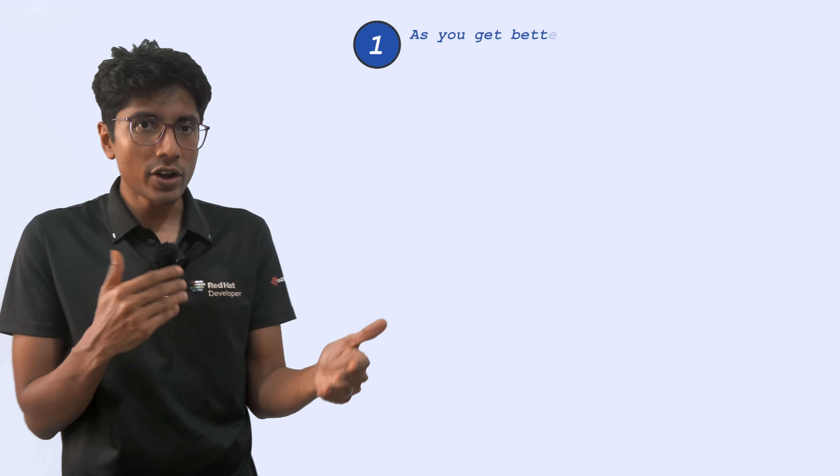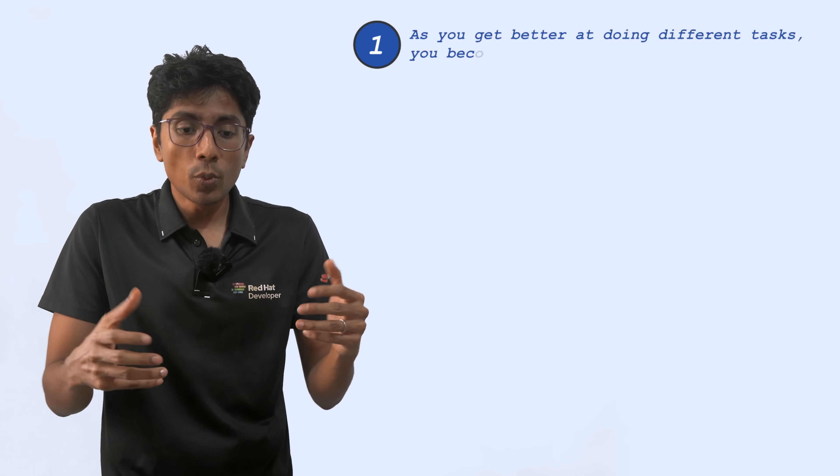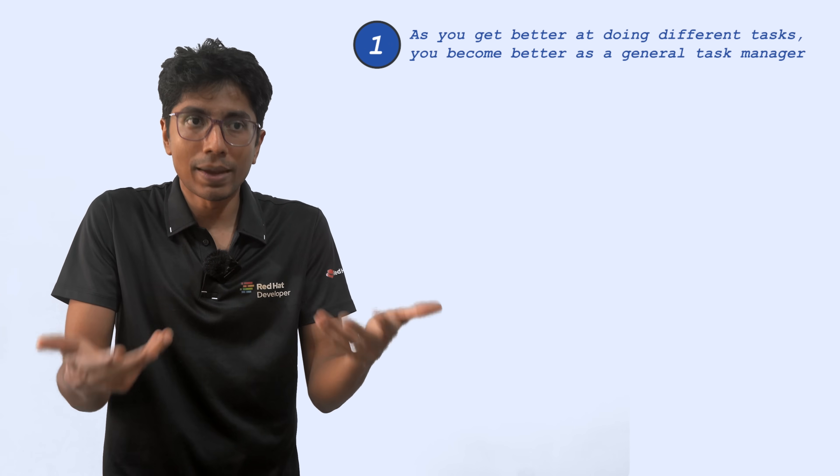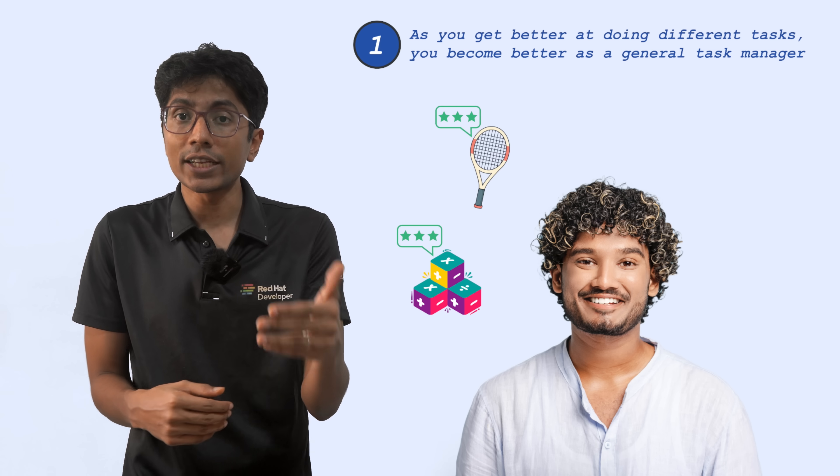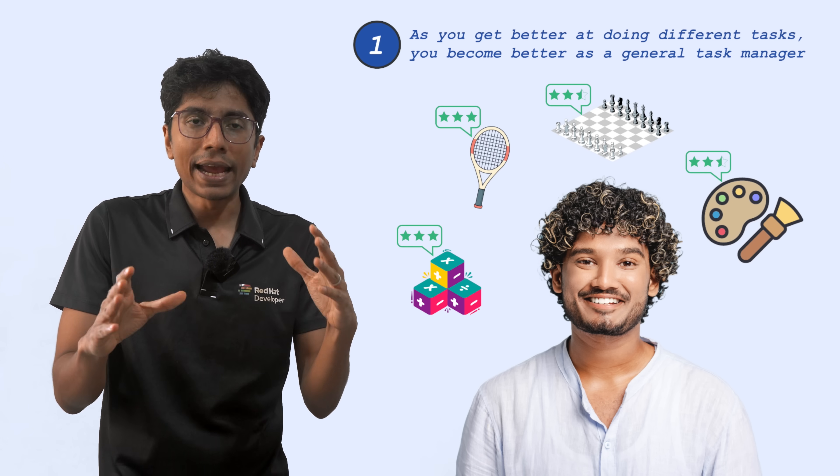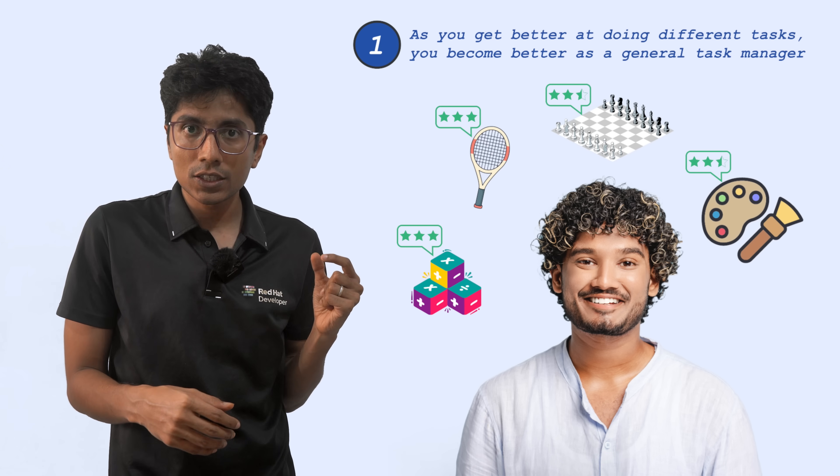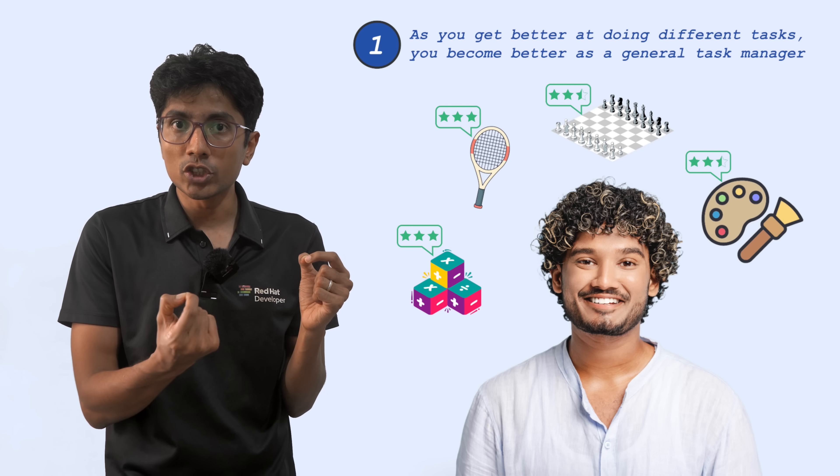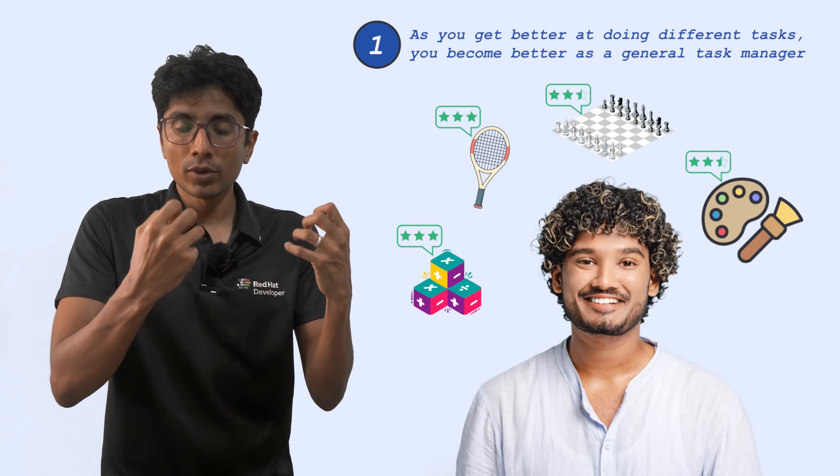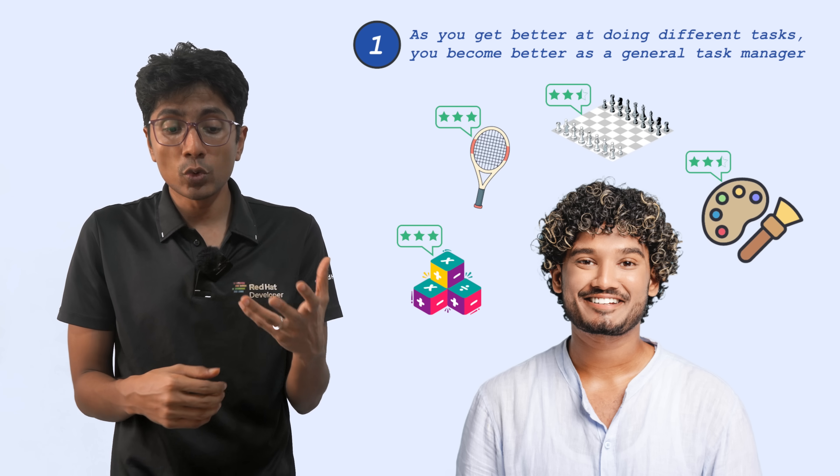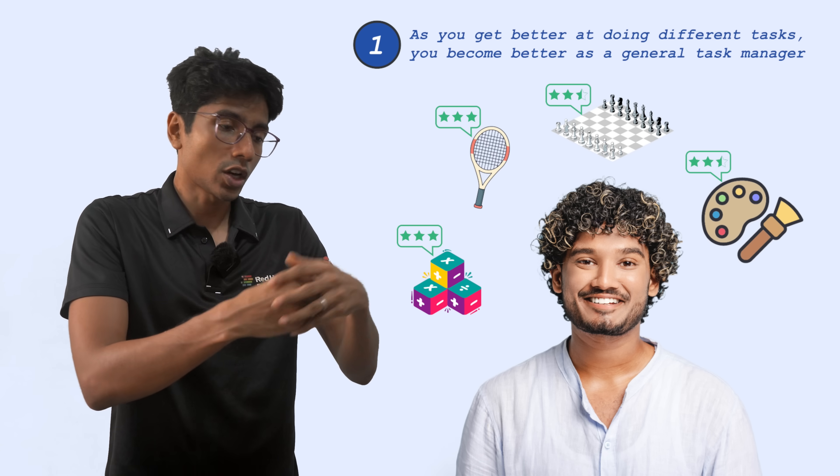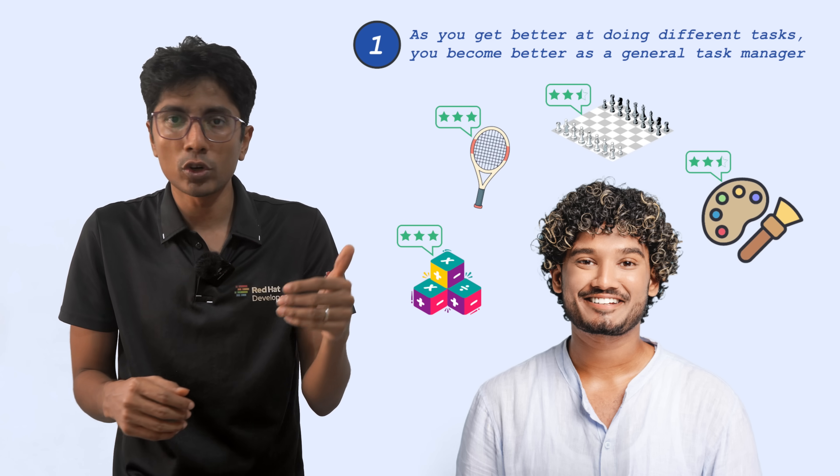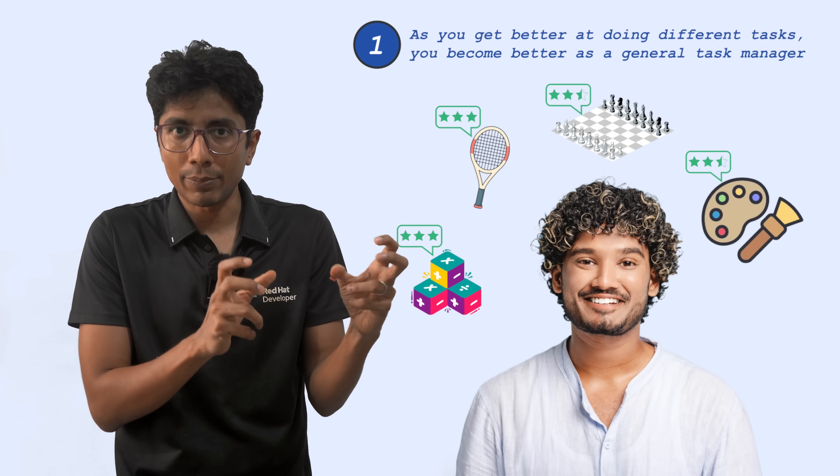The first one is that as you get better and better at doing different tasks, you become better as a general task manager. Which means that if you're good at mathematics, you're good at tennis, you're good at chess, you're probably going to get good at painting also. At a high level, if you are able to do many tasks, you basically have general intelligence, which is being drawn from to do those smaller tasks. This would support the idea of IQ, where you have some sort of general intelligence, which works across all domains. Specific intelligences like sports or music don't seem to fit with this hypothesis.